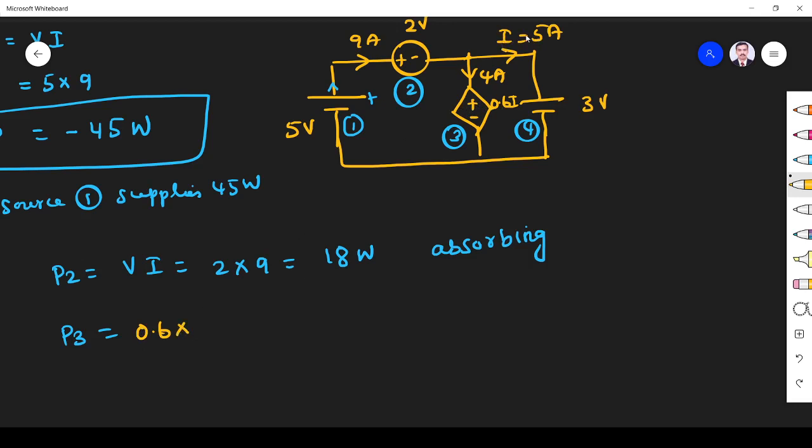I is this I value 5, so 0.6 into I, that is our V. I is 4 ampere. So 0.6 into 5 is 3, 3 into 4 is 12. So 12 watts. And current enters through positive terminal, so it is absorbing power.